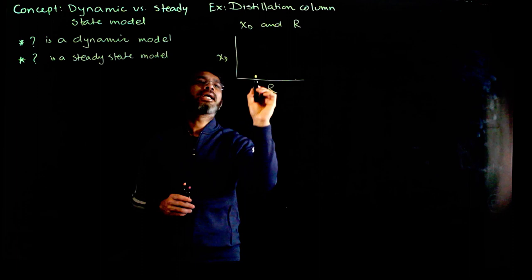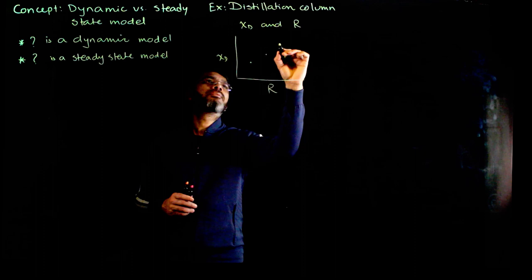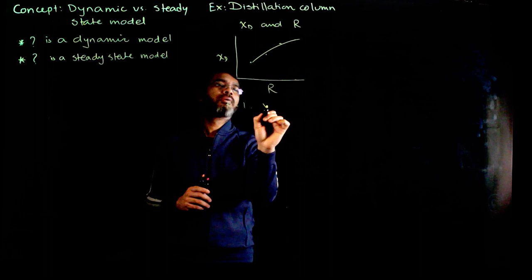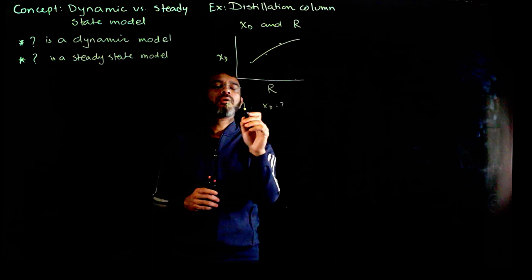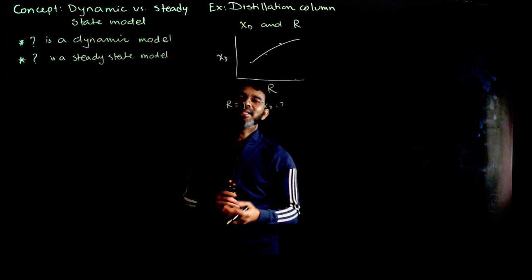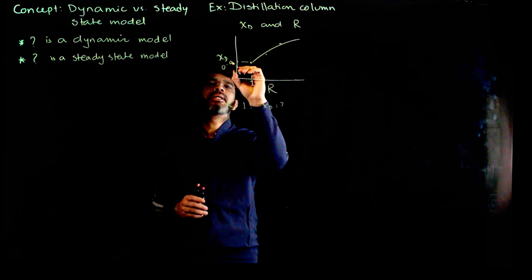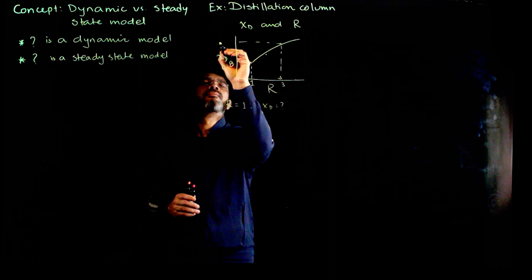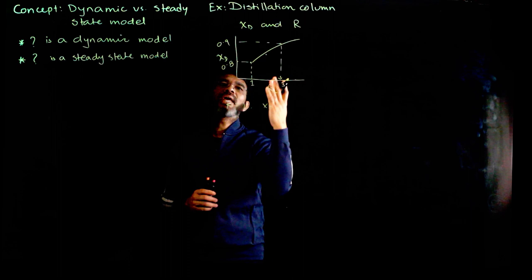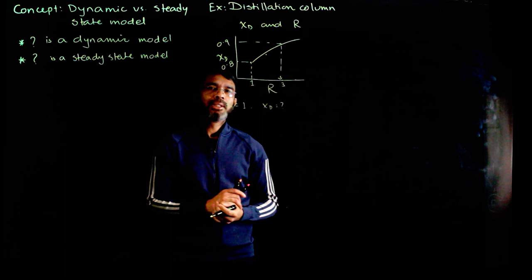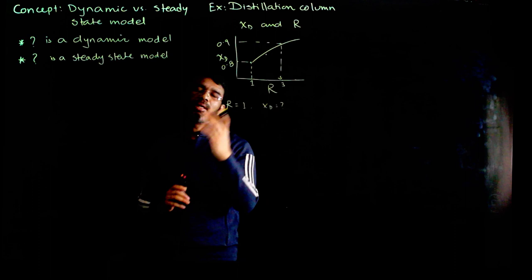A steady state relation between xd and r would show: if r is 1, what is xd; if r is 2, what is xd, and so on. For example, if you want to maintain xd at 90%, you may need to set the reflux ratio to 3; to maintain 80%, you set it to 1.